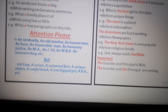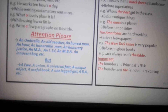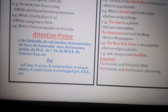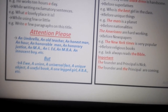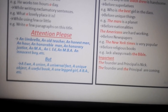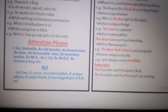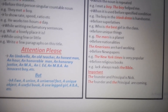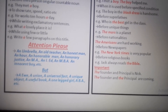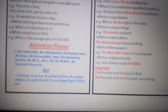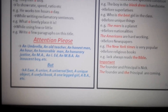Now, an important part: the use of 'an'. An umbrella — 'umbrella' produces a vowel sound, that's why 'an' is used there. Next: 'an old teacher' — 'old' produces a vowel sound, that's why 'an' is used there.